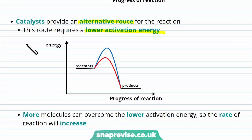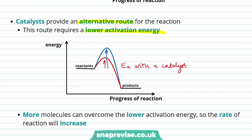Now looking at the reaction profile with the addition of a catalyst, we can label on the activation energy of that reaction. The red arrow represents the activation energy with our catalyst. We can see the reaction profile with our catalyst has a much lower activation energy. As a result, more molecules can overcome this lower activation energy, there'll be more successful collisions per unit of time, and so the rate of reaction will increase.